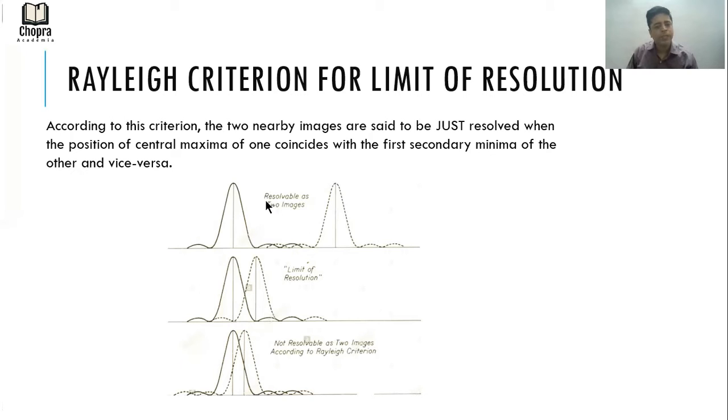But Rayleigh said there is something called limit of resolution. This is when the central maxima of the first image coincides with the first secondary minima of the other and vice versa. Here you have principal maxima of the first one coinciding with the secondary minima of the other one. This is the distance or limit of resolution.